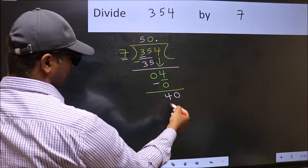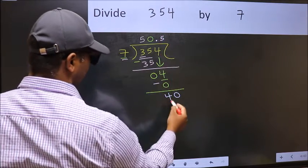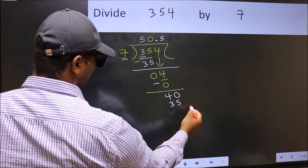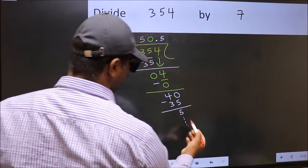So 40. A number close to 40 in 7 table is 7, 5, 35. Now you subtract, you get 5. And continue the division.